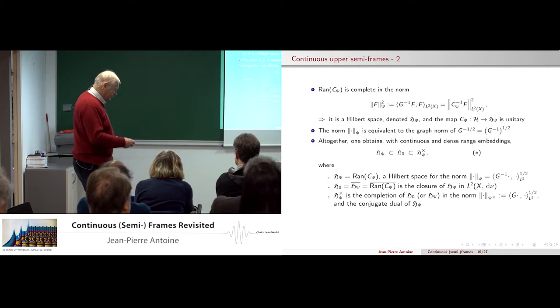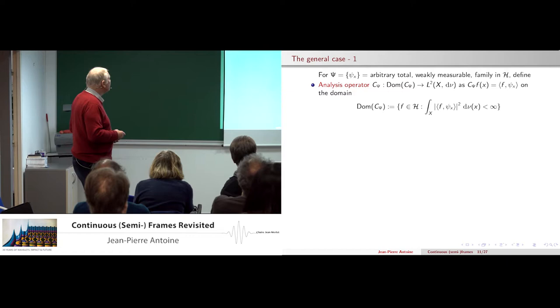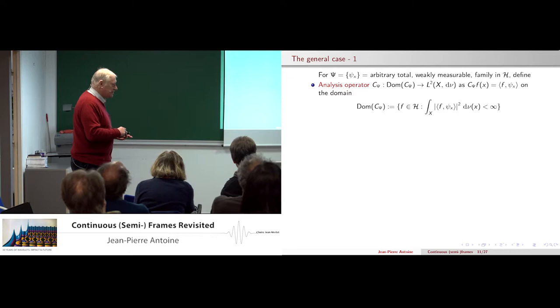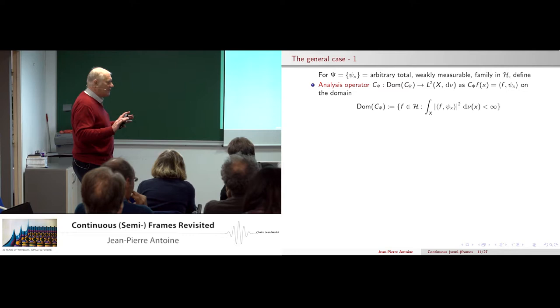If you have a frame, everything collapses: all three spaces collapse to each other with equivalent norms because G minus one is equivalent to the identity. Now, taking the general case with no bound whatsoever — just a general weakly measurable family of vectors on X — you have to redefine the three operators, now carefully defining domains to ensure everything makes sense.